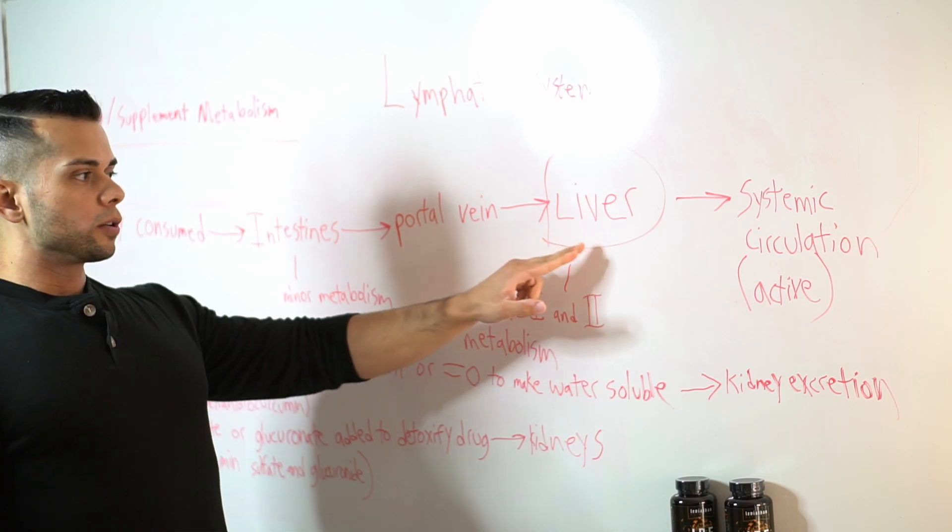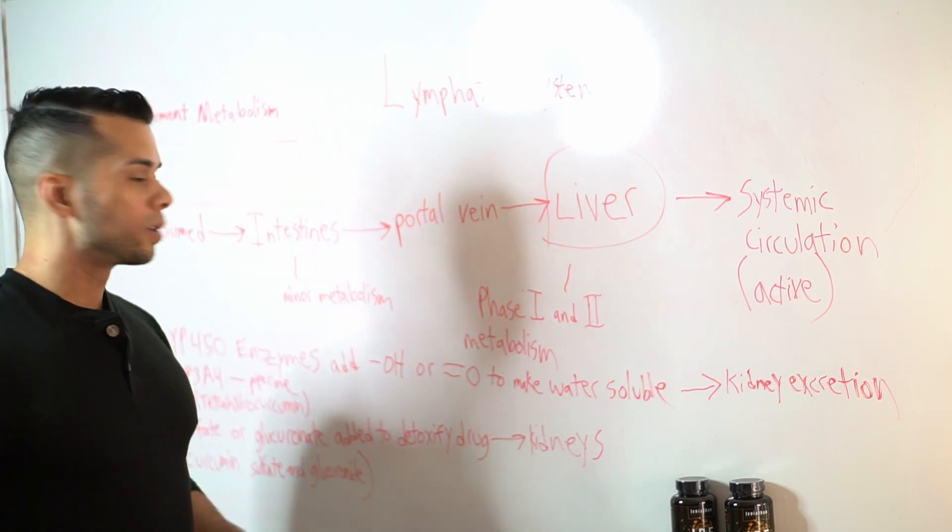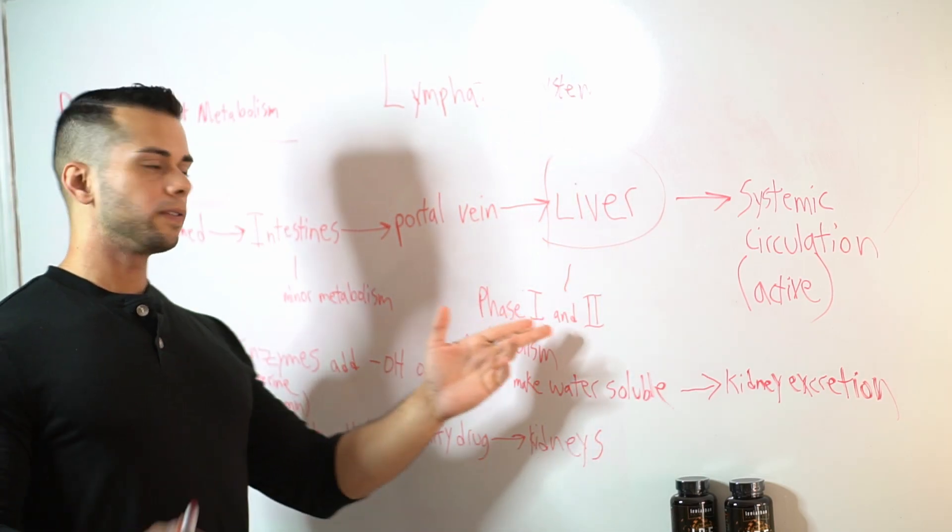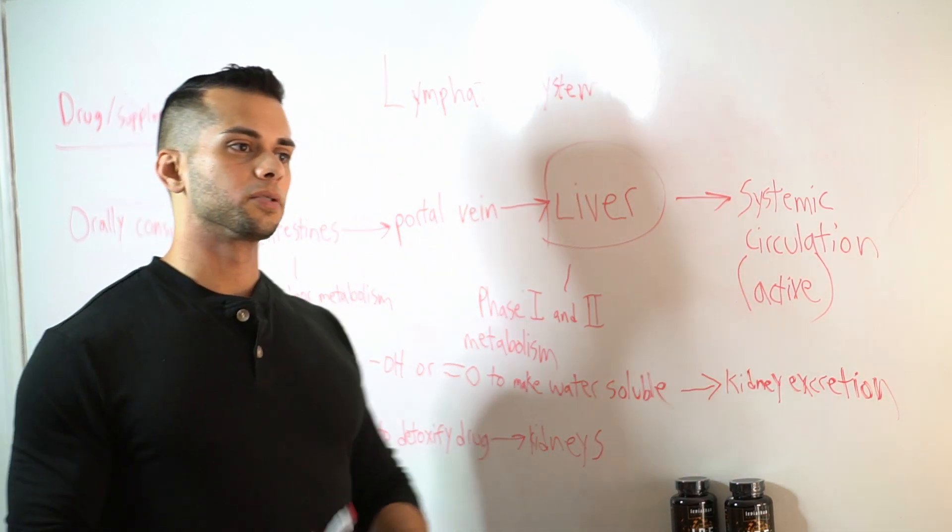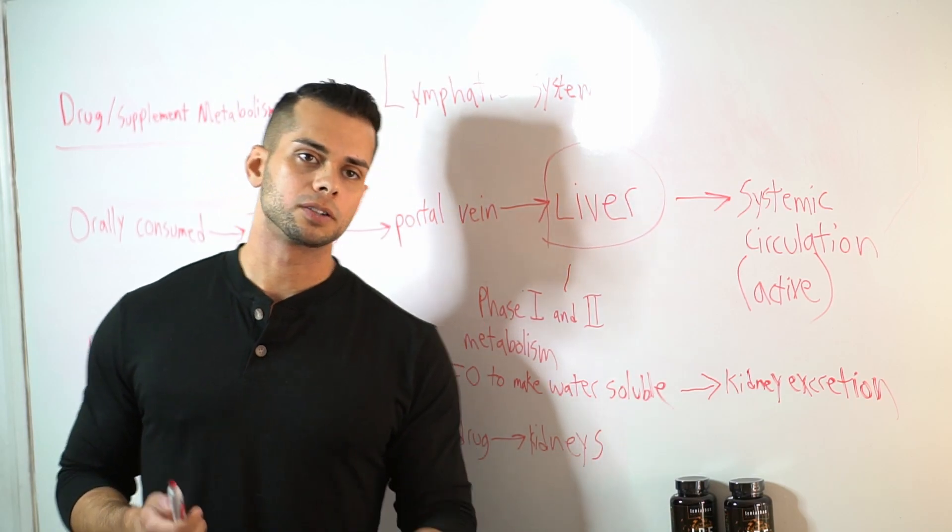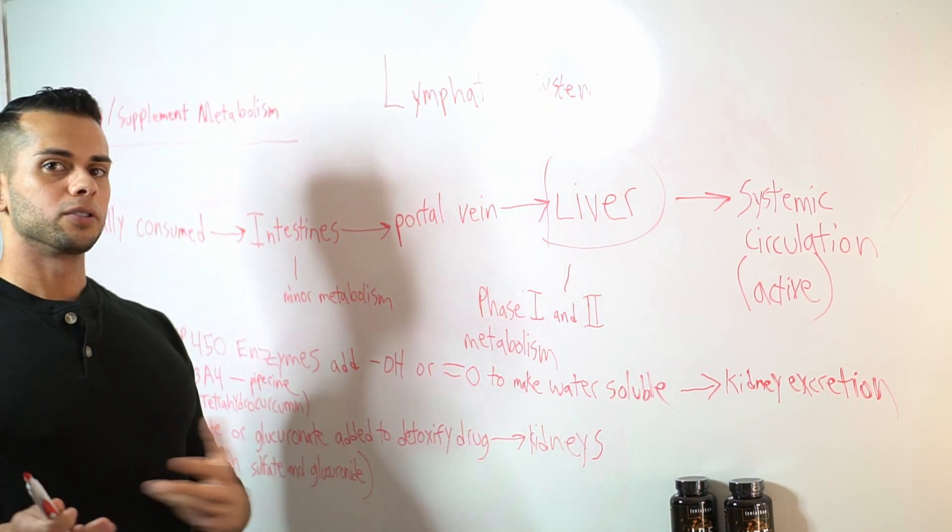So right here through the liver, we undergo what is known as phase one and phase two drug metabolism. If you are a pharmacology student, this is what you learn in your first year of pharmacy school so you can better understand drugs.